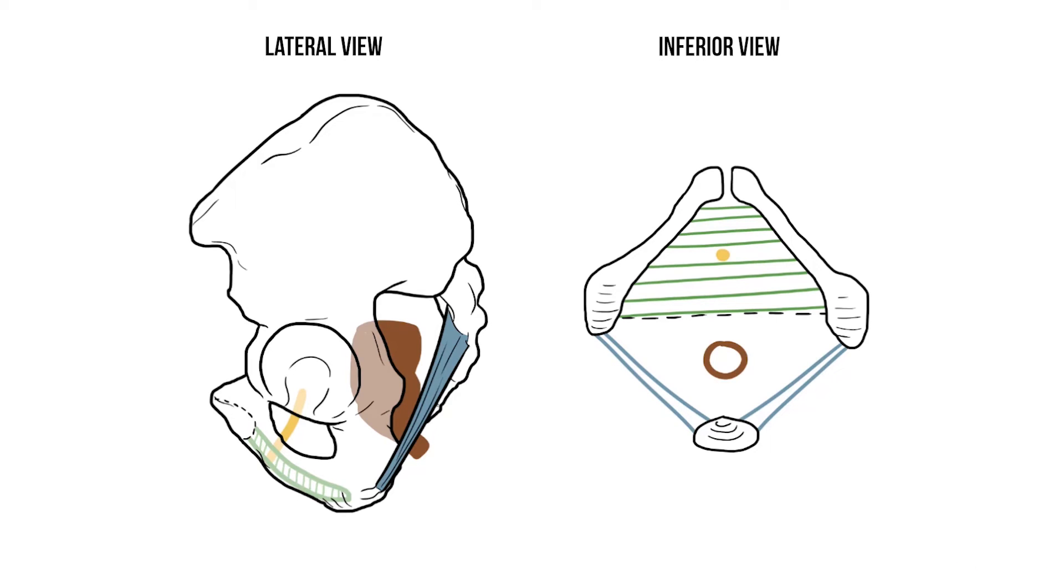Now there are a few things you need to know about this space. First the section of the urethra passing through it is known as the membranous urethra.